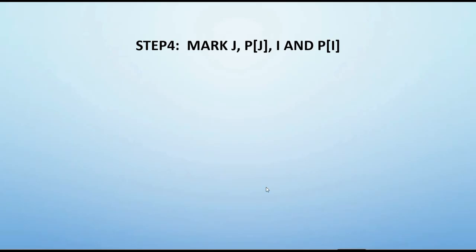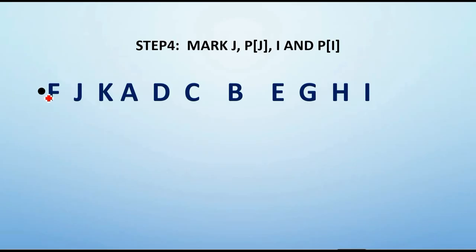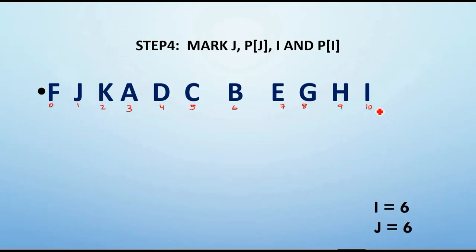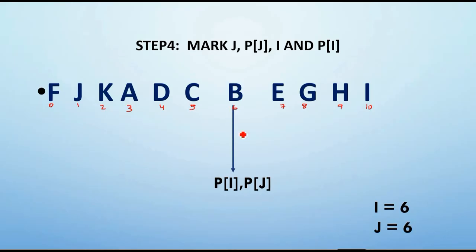In Step 4, we mark P(j), P(i), i, and j. From the previous step, when the condition failed, i and j were both 6. So P(i) and P(j) will both be B, since P(6) and P(6) is B. With this information, moving on to the next step.